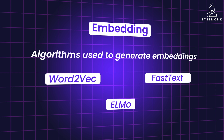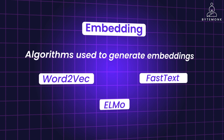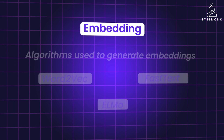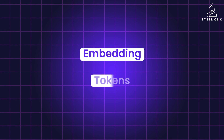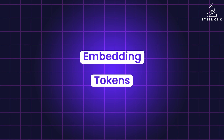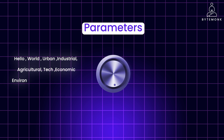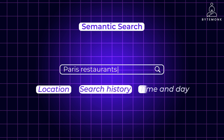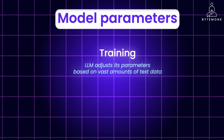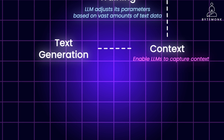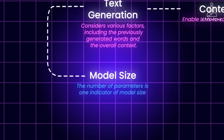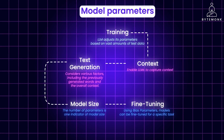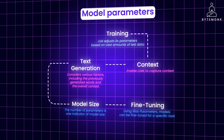Now that you understand two essential aspects of LLM architecture — tokens and embeddings — in the next video we'll start by understanding parameters, semantic search, and prompting, and also explore what it takes to build an LLM from scratch using fine-tuning and in-context learning.